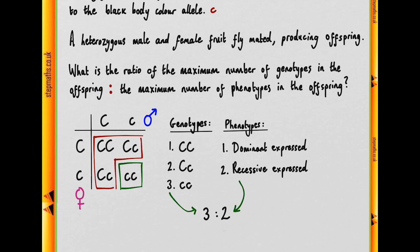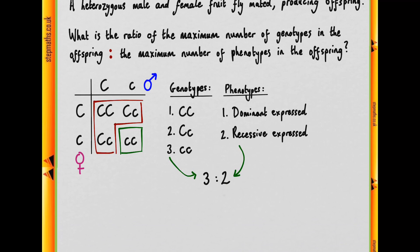So we have two different phenotypes and three different genotypes, so the simplest ratio is three to two, and that gives us our answer, which is option C.